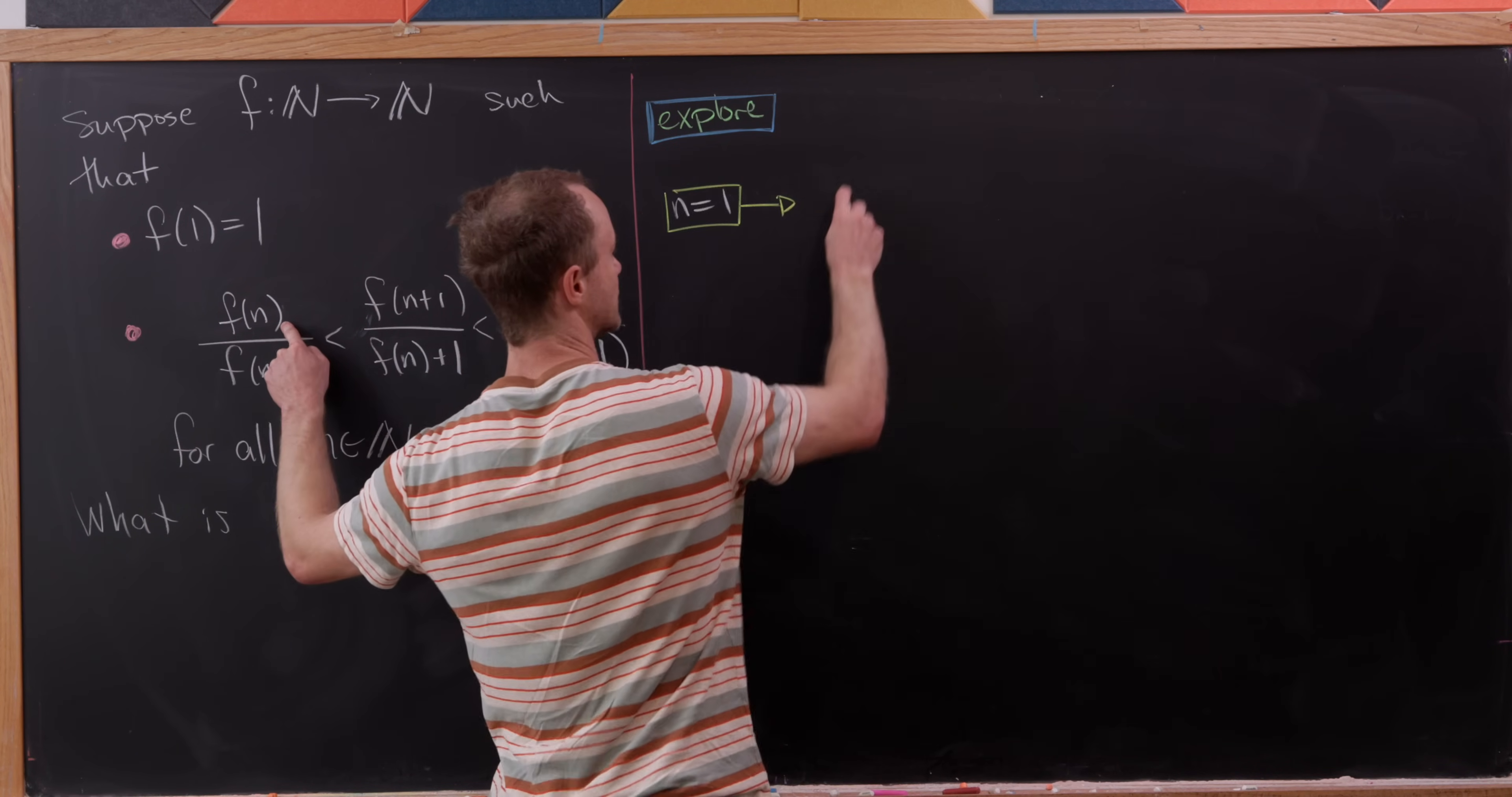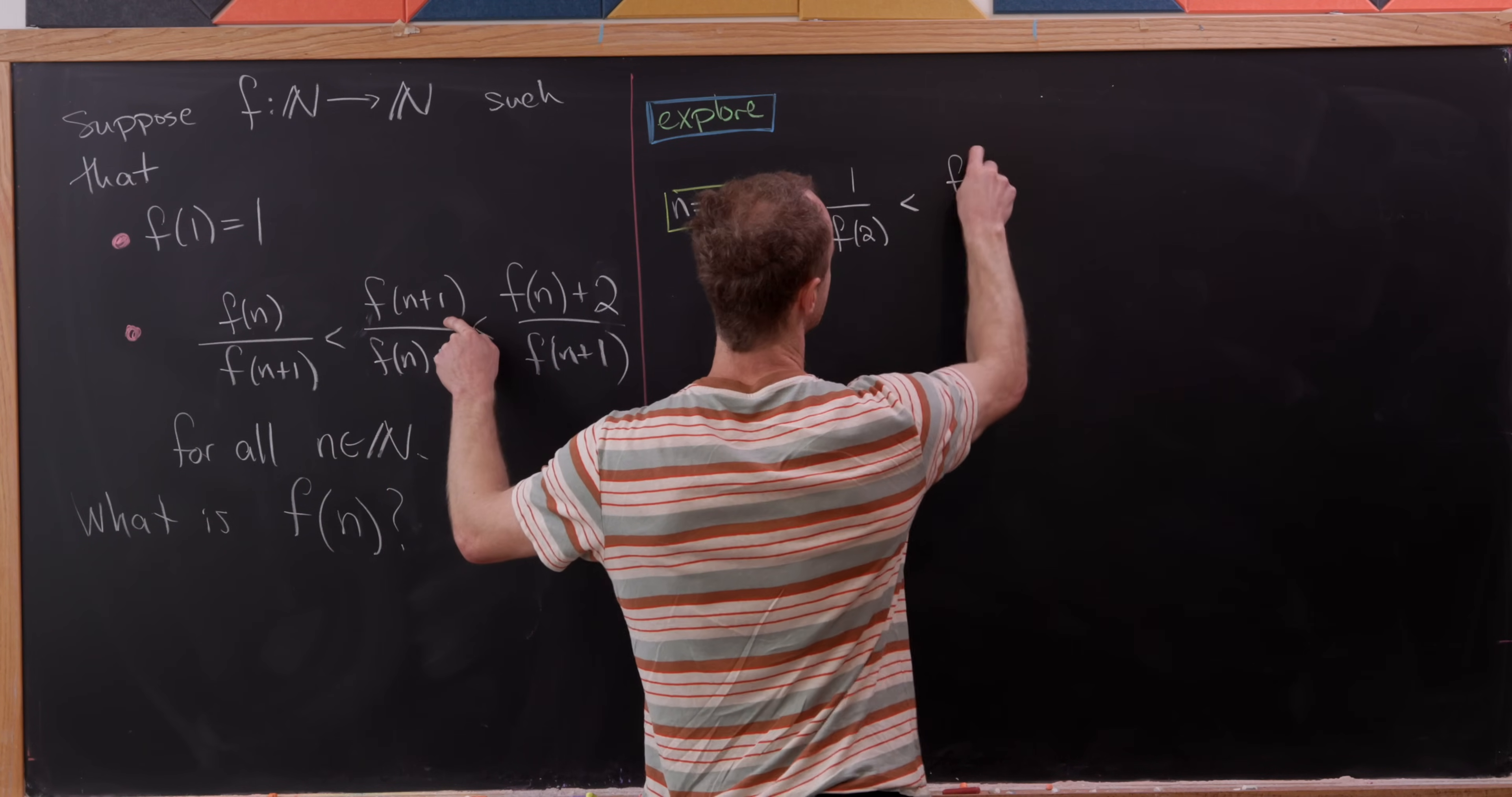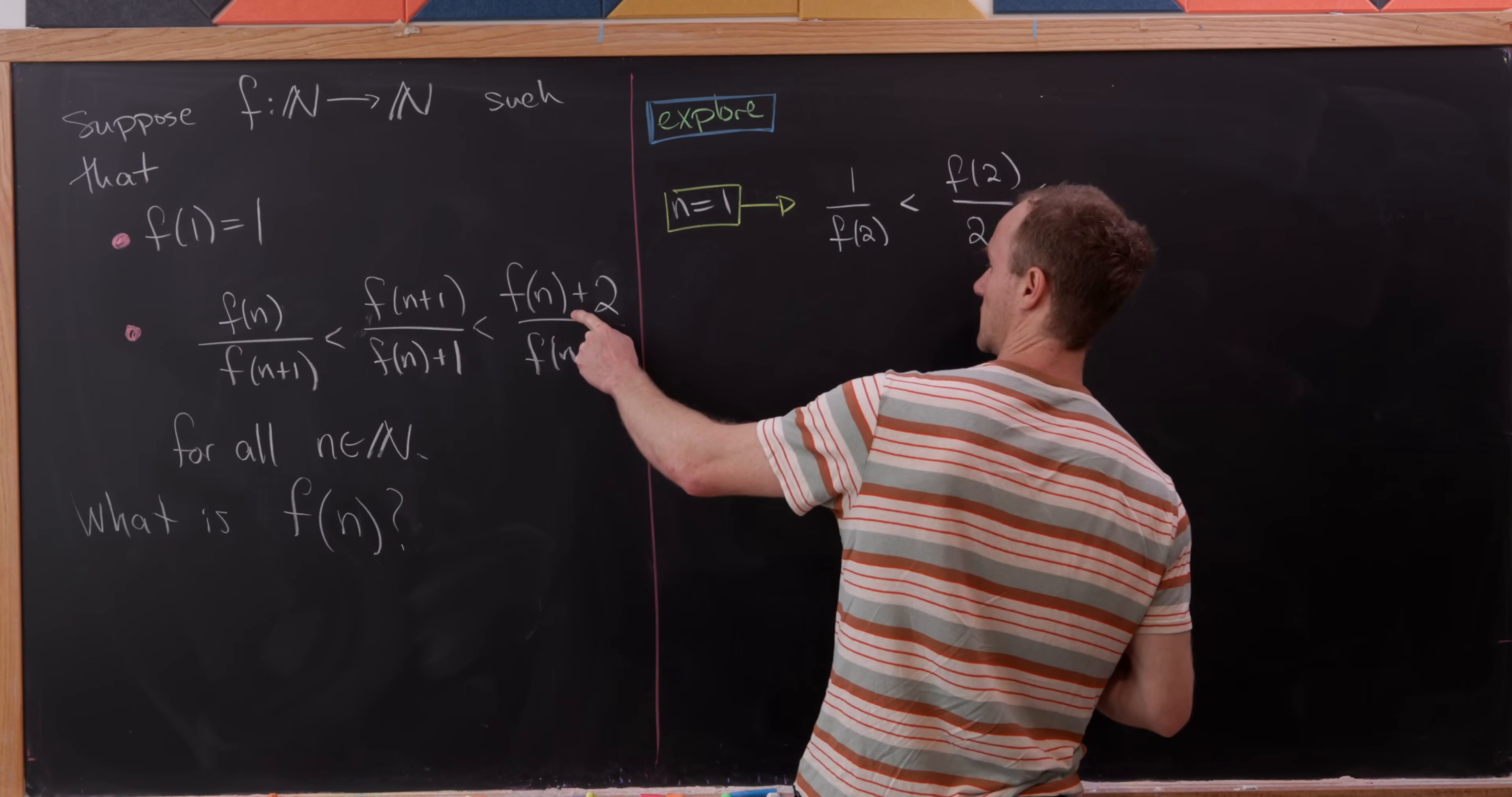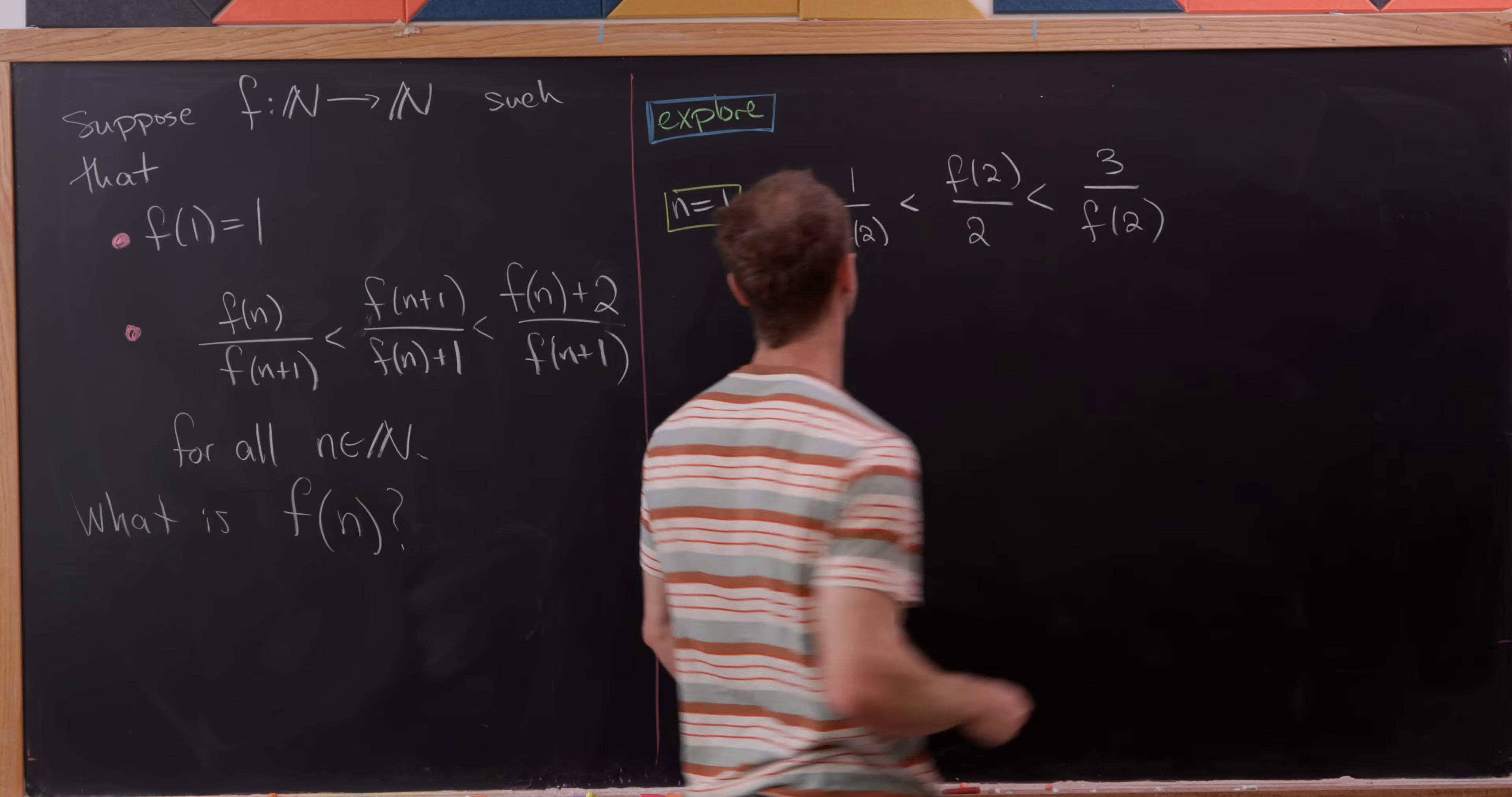So we're going to start with this left hand portion. We have f of one, which is one, over f of two is less than f of two over f of one plus one, which is two, which is less than f of one plus two, which is three, over another f of two.